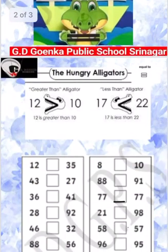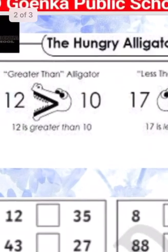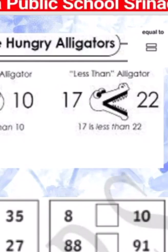We have a hungry alligator. We have number 12 and number 10. The hungry alligator will open its mouth from number 12 because 12 is greater than 10. Likewise, we have number 17 and number 22 — the alligator will open its mouth from number 22 because 22 is greater. The alligator always opens its mouth from the largest number.